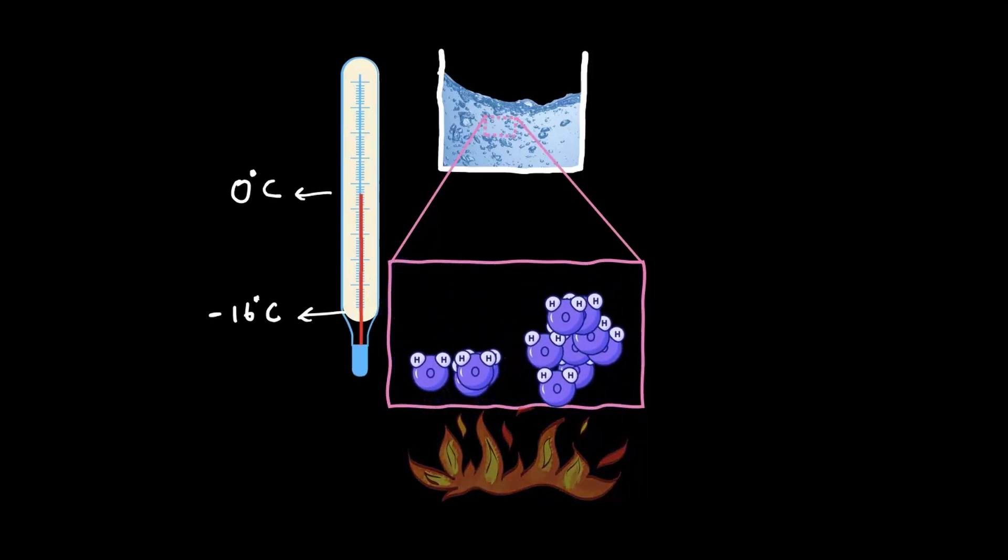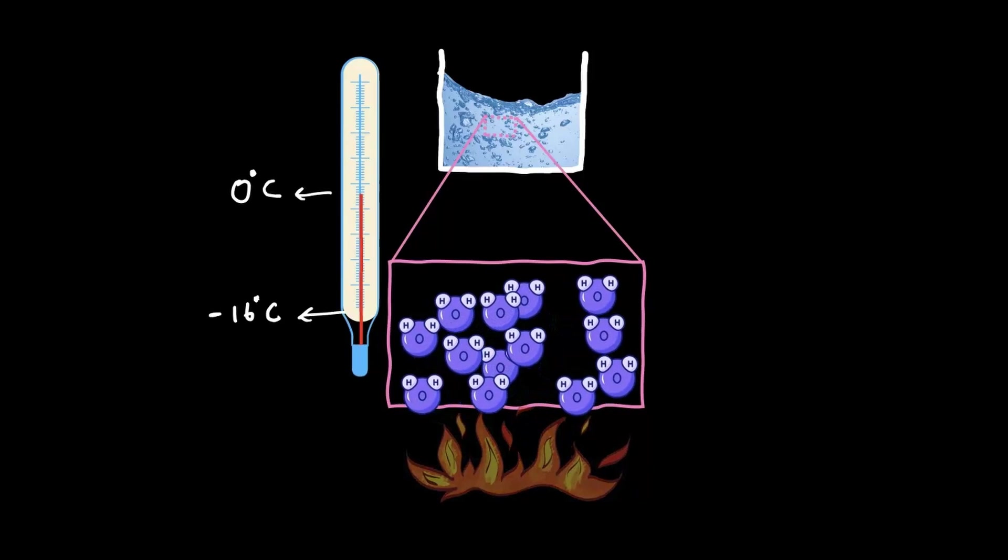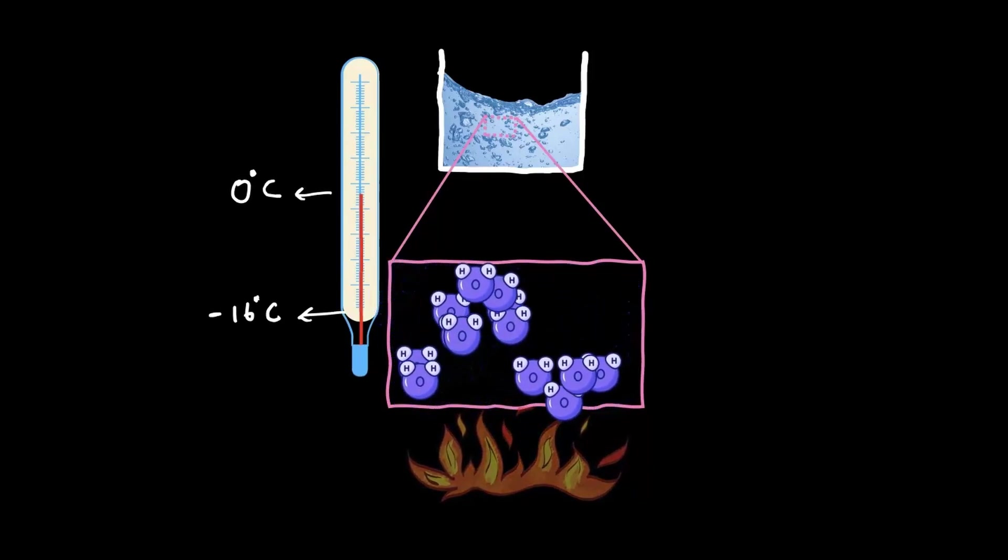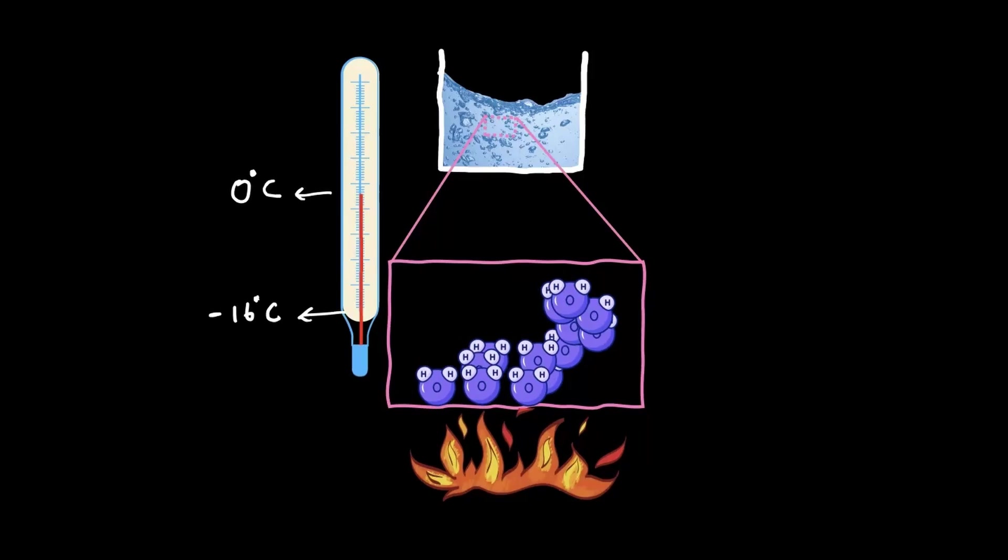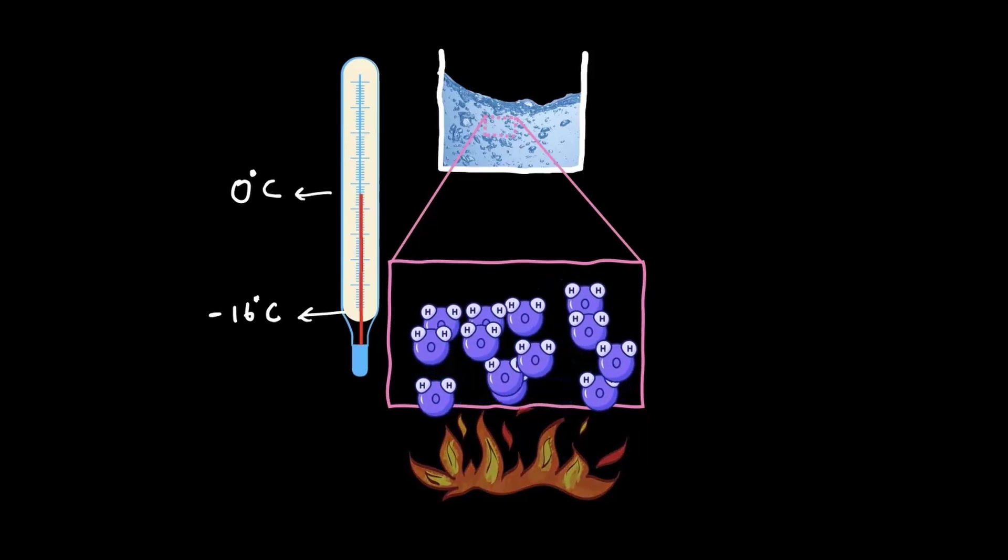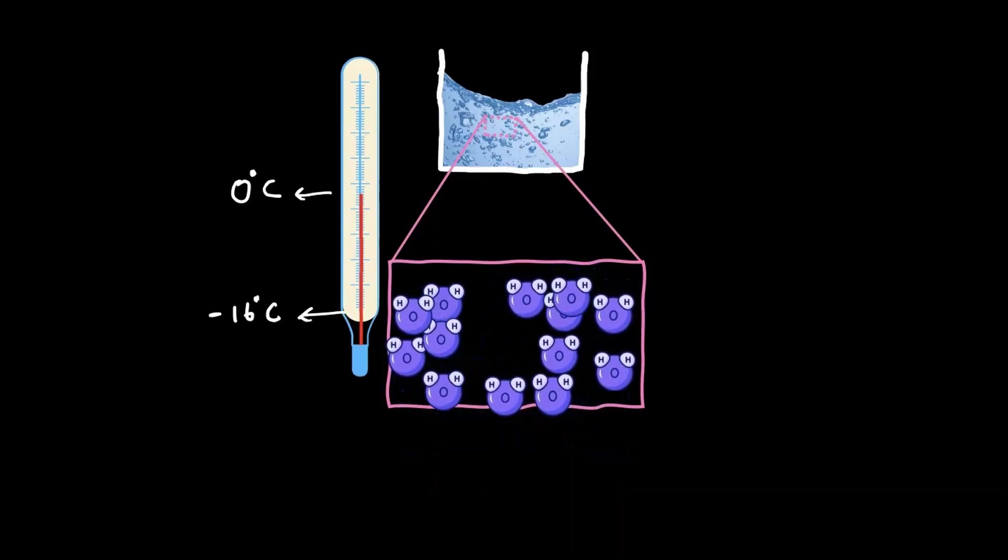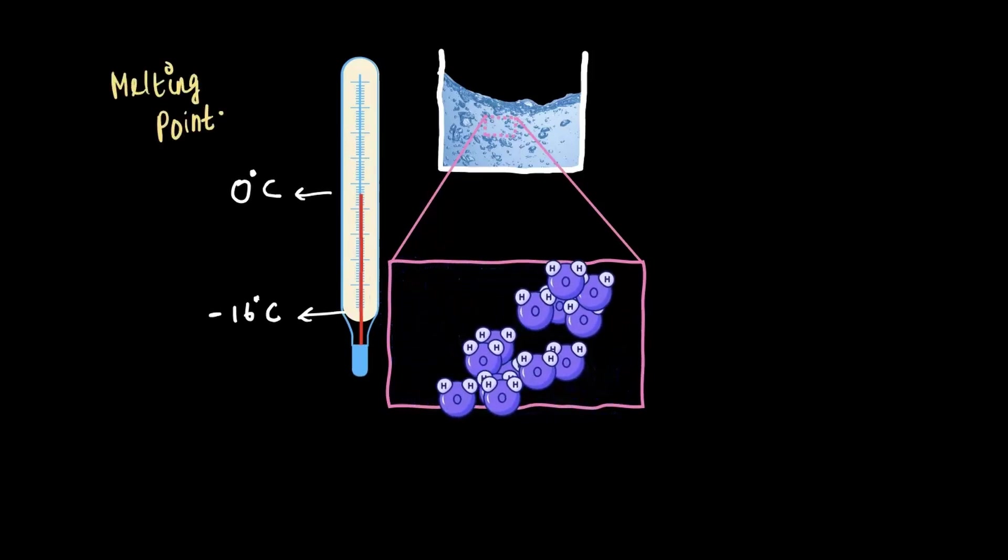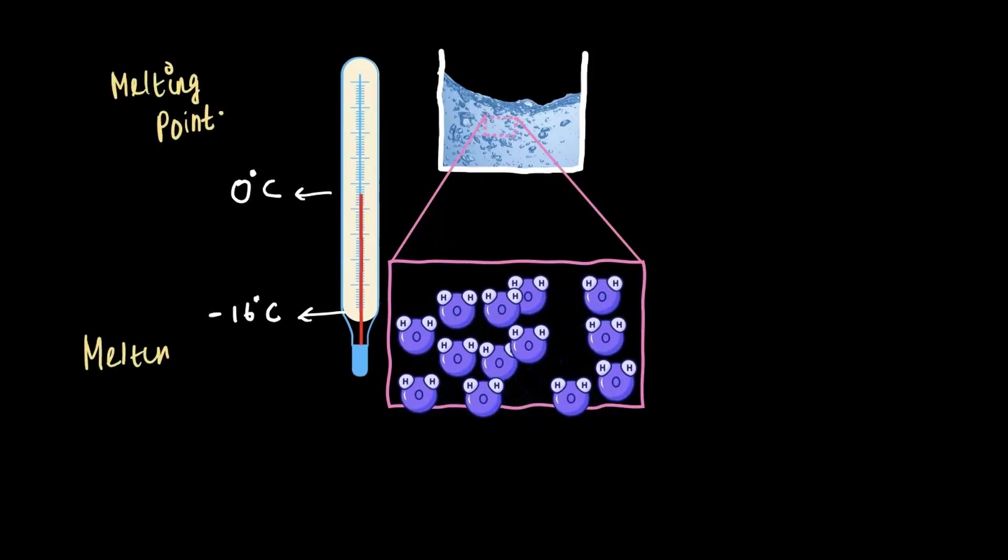This change means the ice has now turned into liquid water. So what we have seen here is the change from solid state to liquid state. The temperature at which this happens, zero degrees Celsius for water, is called melting point, and the process is known as melting.